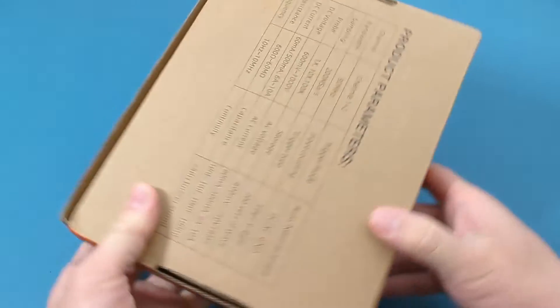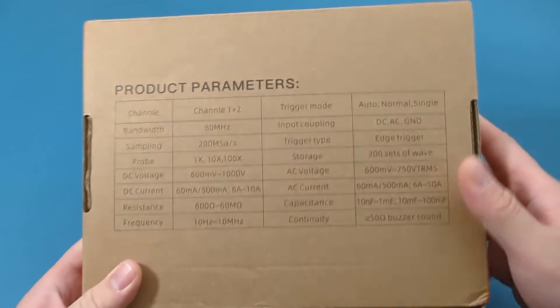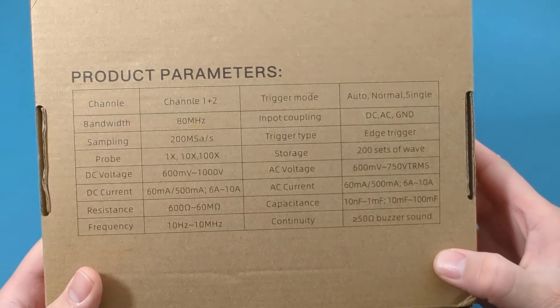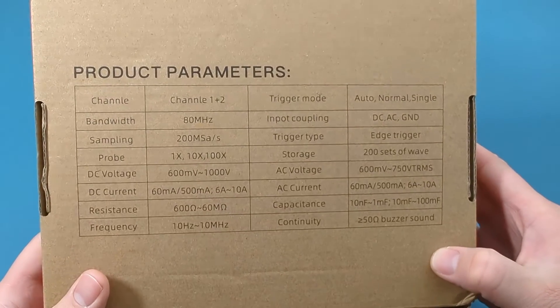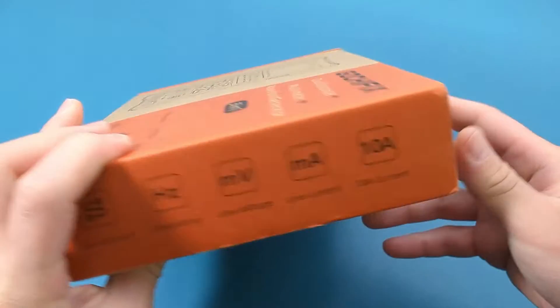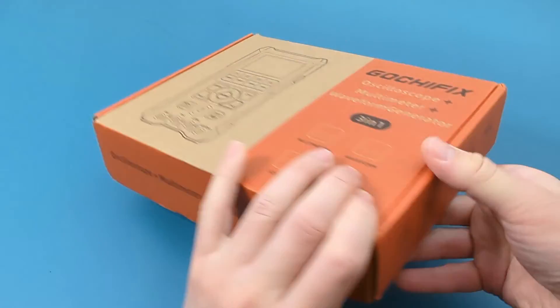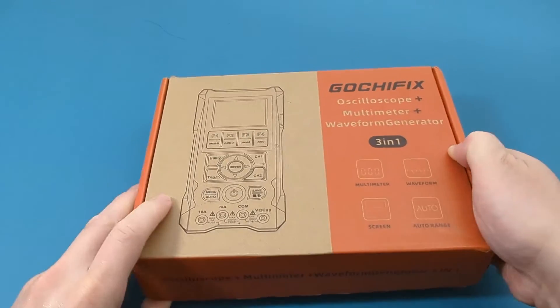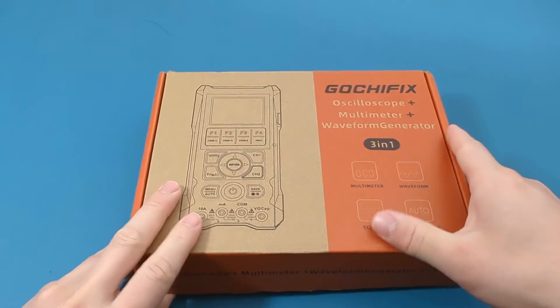The dual channel oscilloscope enables the capture of two distinct signals, such as signals from separate circuits or components. First we'll open the box and evaluate its features.